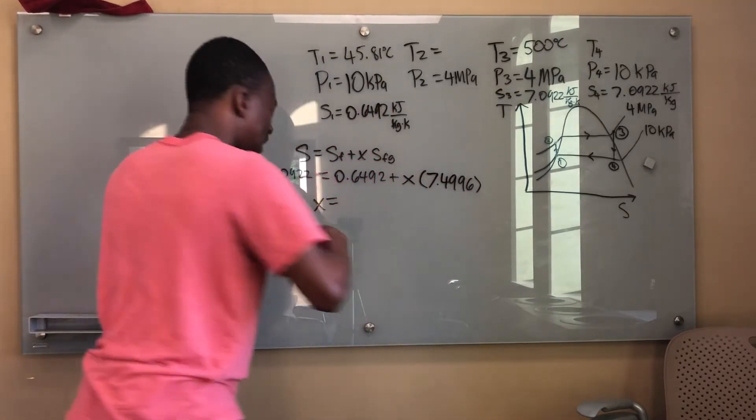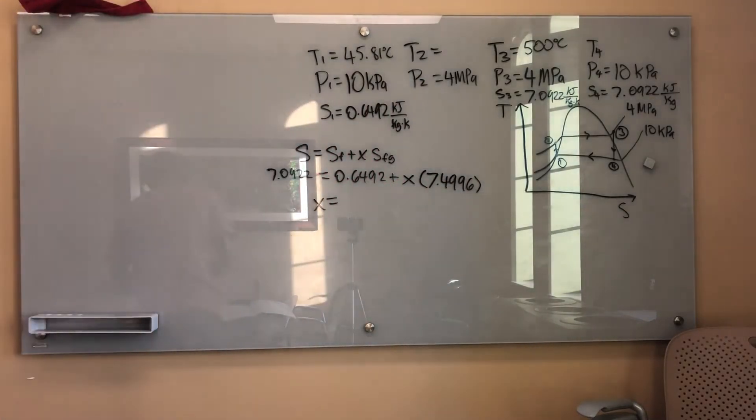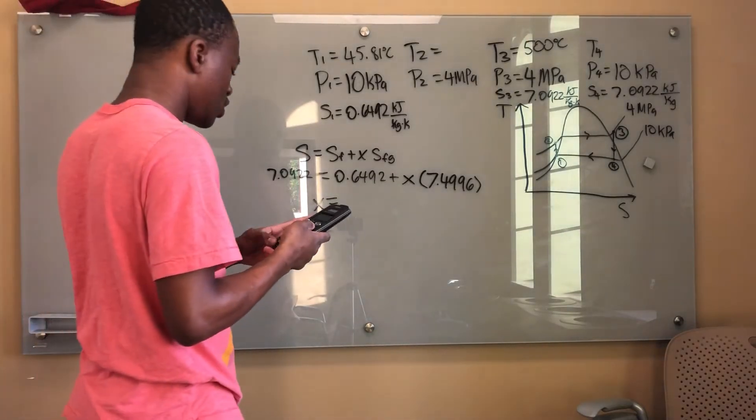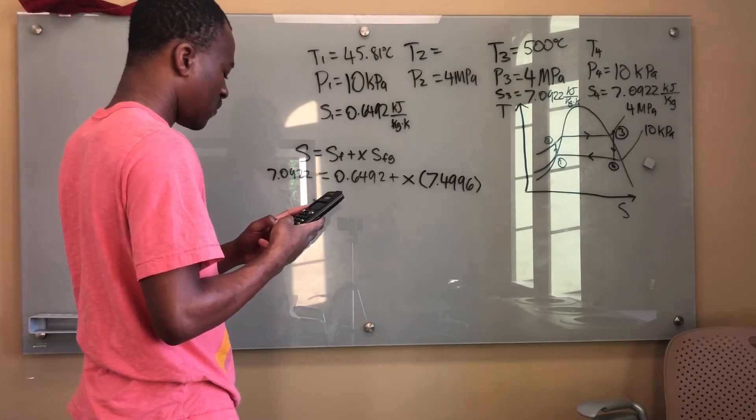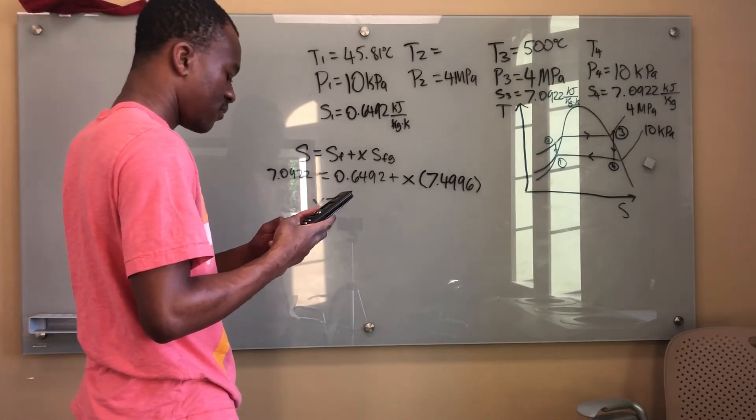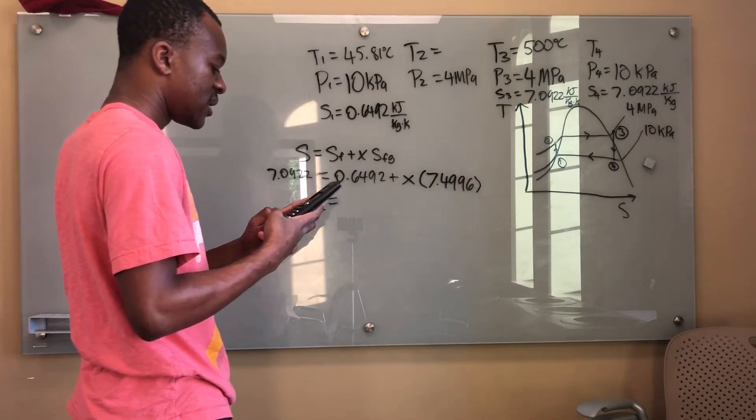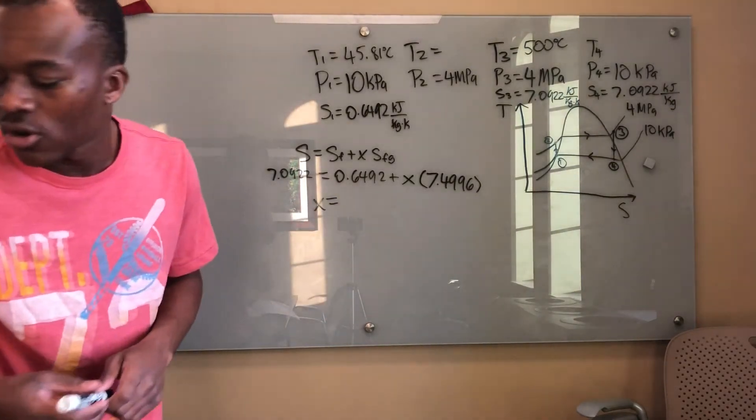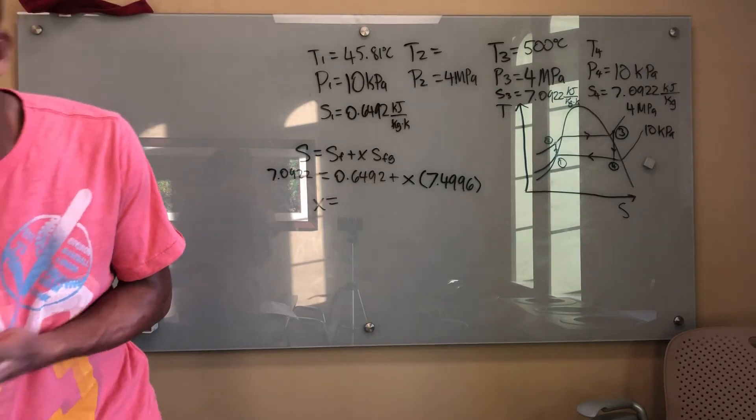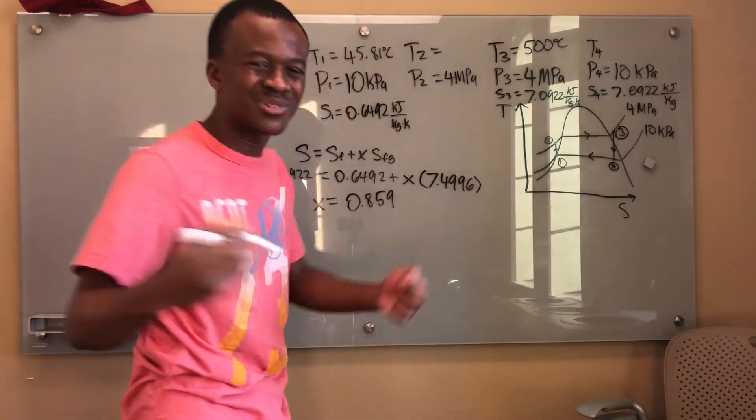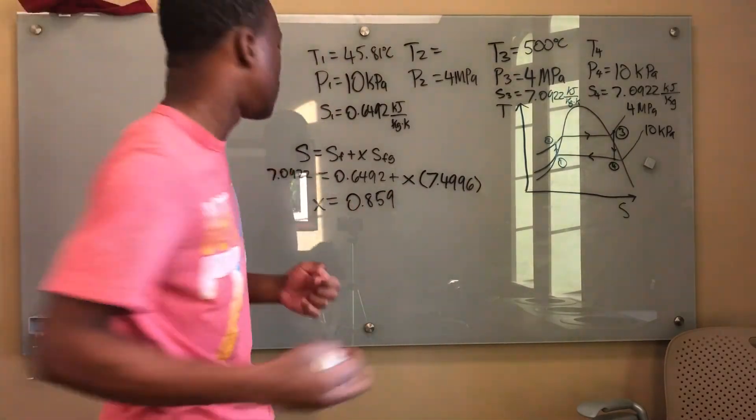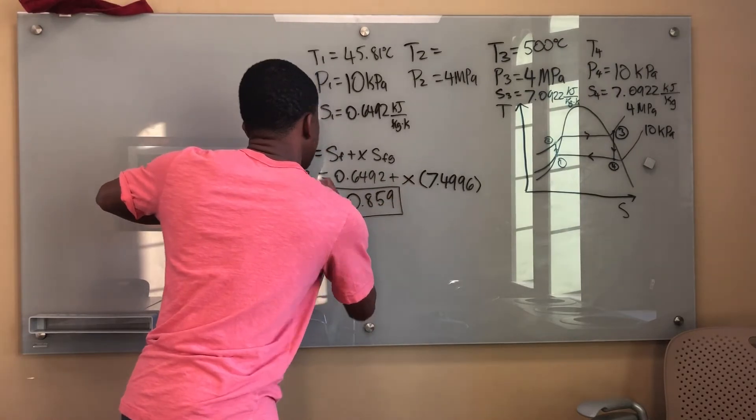Now solving for x, let me grab my calculator. s equals 7.0922 minus 0.6492, that value divided by 7.4996. x has to be equal to 0.859. x equals 0.859, like 0.85912 or something, but I think you can leave it at this or if you want to include that one you can.